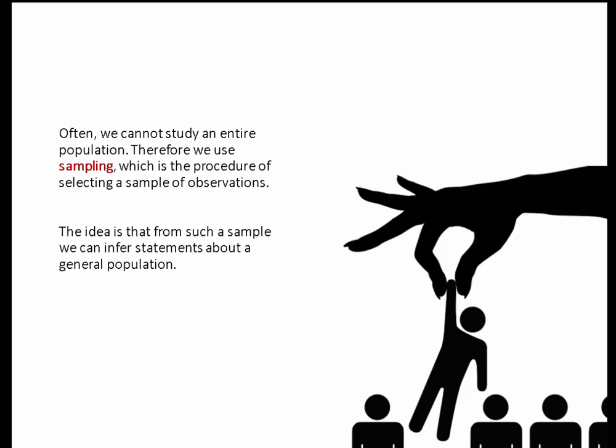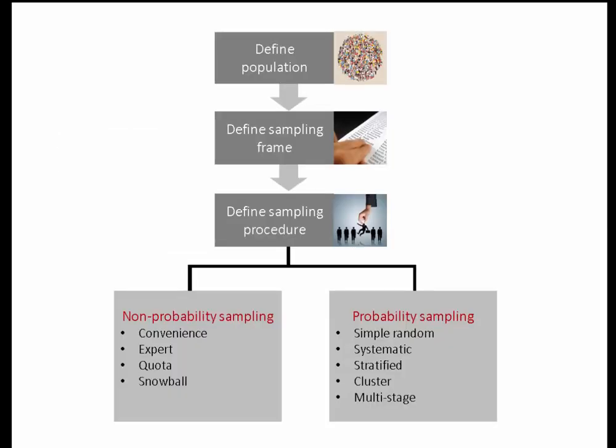Ideally, you start off by asking: who do I want to generalize about at the end of the day? That's the group you can say something about — you define the population. Could be all students at UCD. Then the sampling frame is essentially a list of people in your population. Ideally I'd have a list of all students registered at UCD. In practice, the sampling frame and the population don't always align — people drop out, others join in, some are just lost, some people are here who shouldn't be.